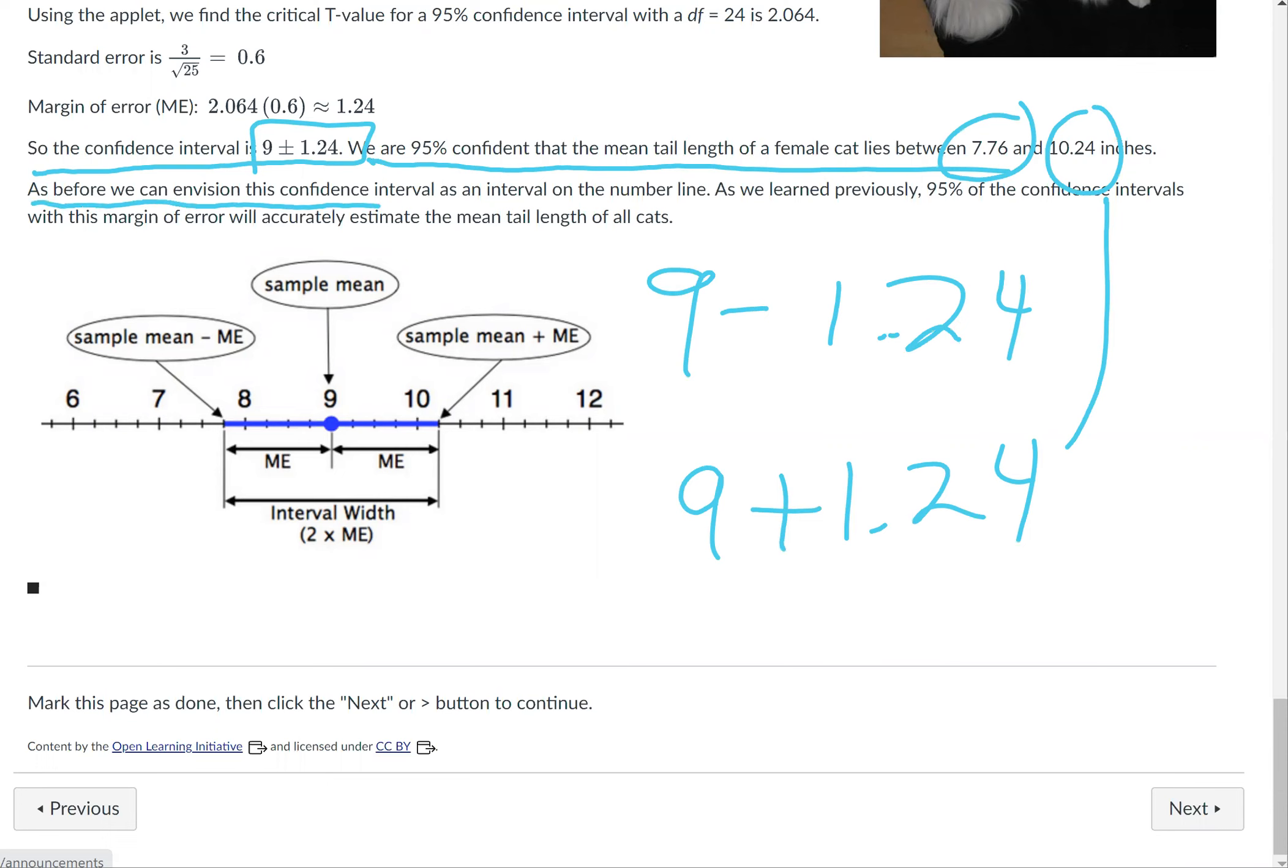As before, we can envision this confidence interval as an interval on the number line. As we learned previously, 95% of the confidence intervals with this margin of error will accurately estimate the mean tail length.